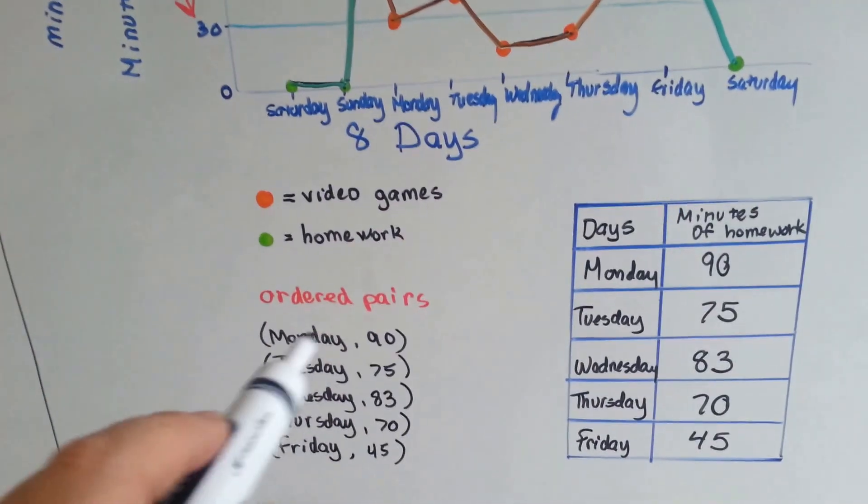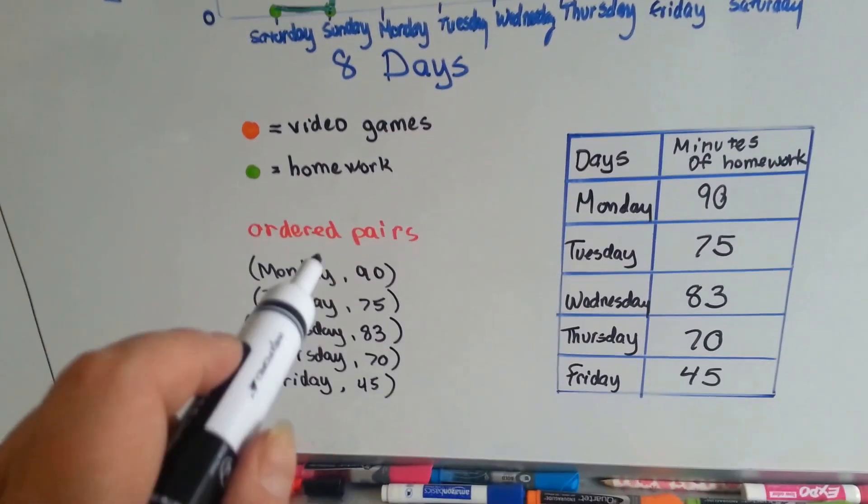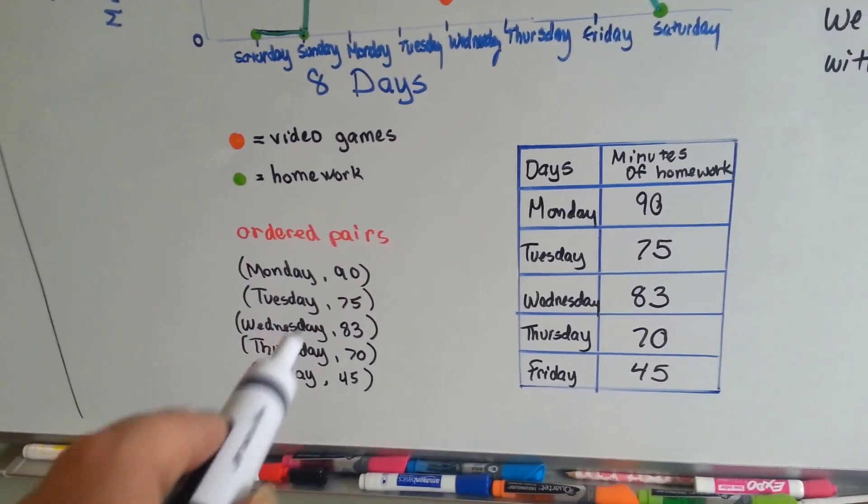So each one of these is an ordered pair. Even though they're not numbers, they're still ordered pairs of data.